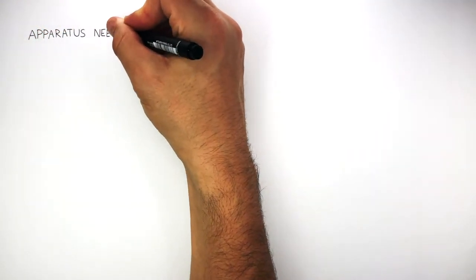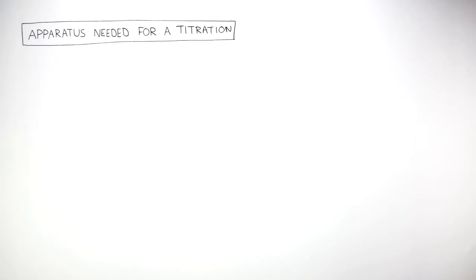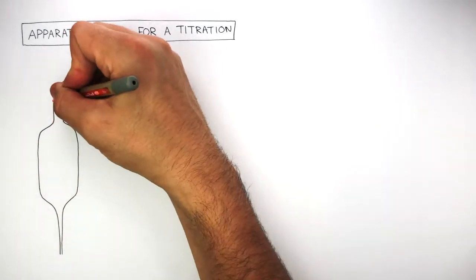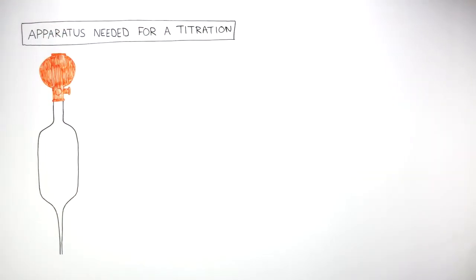The apparatus needed for a titration includes a volumetric pipette and a pipette filler. This is the volumetric pipette. The volumetric pipette measures a fixed volume of the unknown concentration.